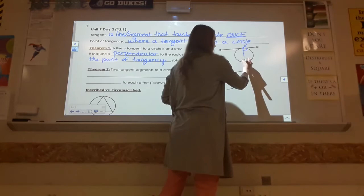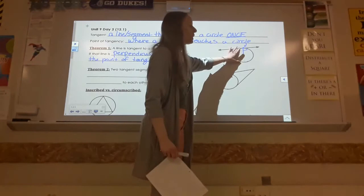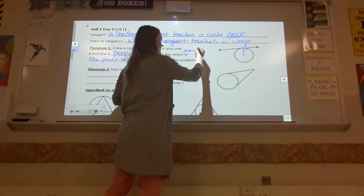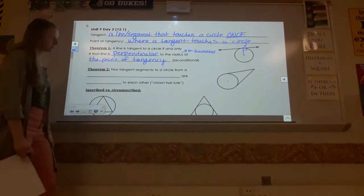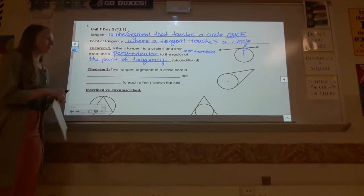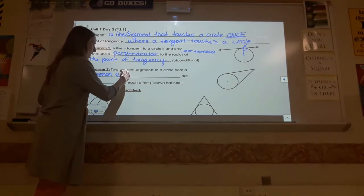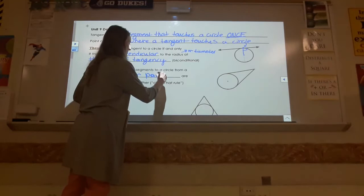Sometimes when working with this theorem, they also use the diameter. Remember that the radius is part of the diameter, so you could say radius or diameter for this theorem. In this picture you may just see half or the full diameter, but it's perpendicular for either of those situations. And then our second theorem says that two tangent segments to a circle from a common exterior point are congruent.